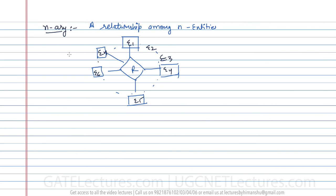There are two types of constraints we can apply on these relationships: number one is the key constraint and number two is the participation constraint. We are also going to study cardinality ratio — the cardinality of a relationship. With key constraints, participation constraints, and cardinality, we'll see what are one-to-one, one-to-many, many-to-one, and many-to-many relationships. Let us move on to the next video where I'll explain key constraints and participation constraints.